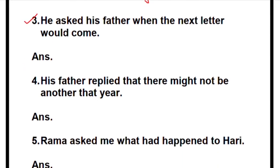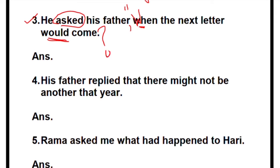Third one: 'He asked his father' — change 'asked' to 'said to': 'He said to his father,' then add a comma and open the quotes. This is a WH question, so we do not use 'if' or 'whether.' Write it in capital letter — 'When.' 'Would come' — change it back: 'would come' becomes 'will come.' The sentence must end with a question mark. So: 'When will the next letter come?'